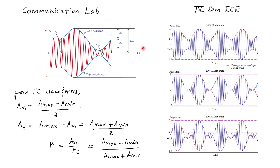From this waveform, the expression for the amplitude of the message signal can be written as: A maximum minus A minimum divided by 2. The expression for the carrier amplitude is given by A maximum minus AM. If we substitute the expression for AM, we get the full expression for carrier amplitude.